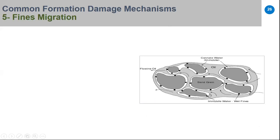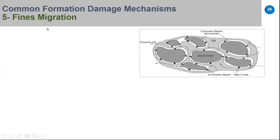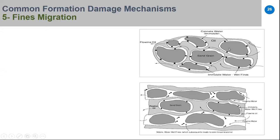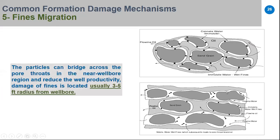The last damage mechanism is fine migration. In oil reservoirs, a water film around the grains typically contains fine clays like kaolinite. When water is produced and mobilized, these fines migrate along the flow path toward the near-wellbore region and can bridge across pore throats, decreasing permeability to oil.